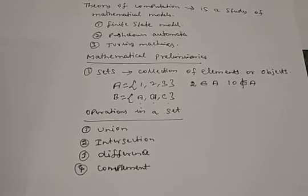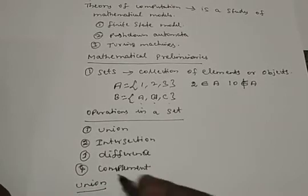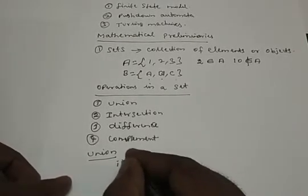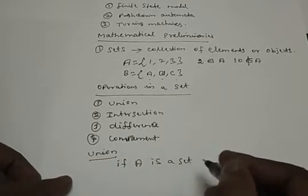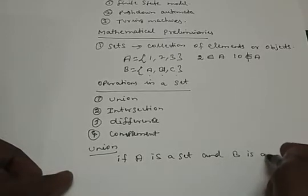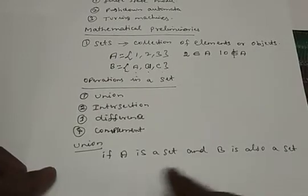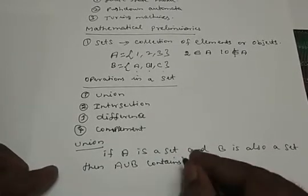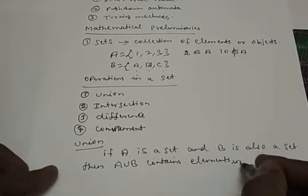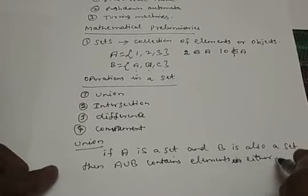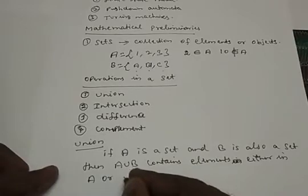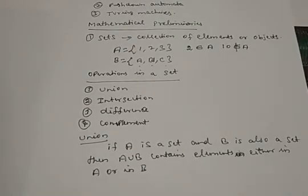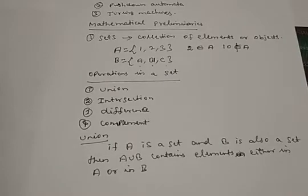Union can be performed with two sets. If A is a set and B is also a set, then A union B contains elements that are either in A or in B. The resultant set will consist of values from A or from B.